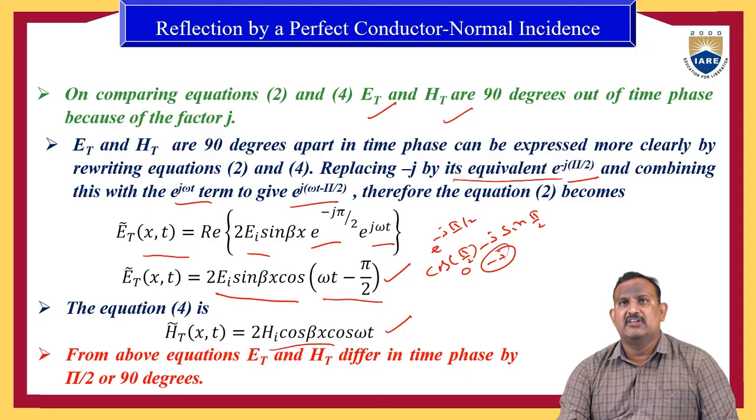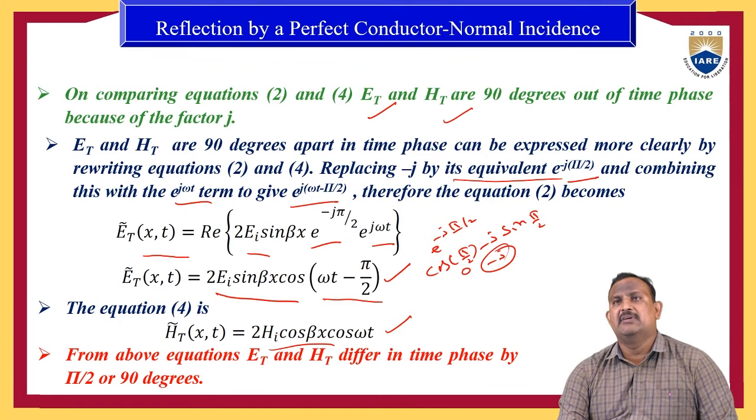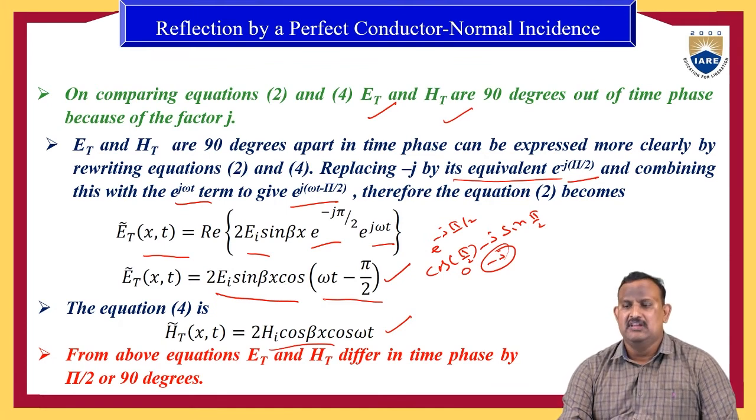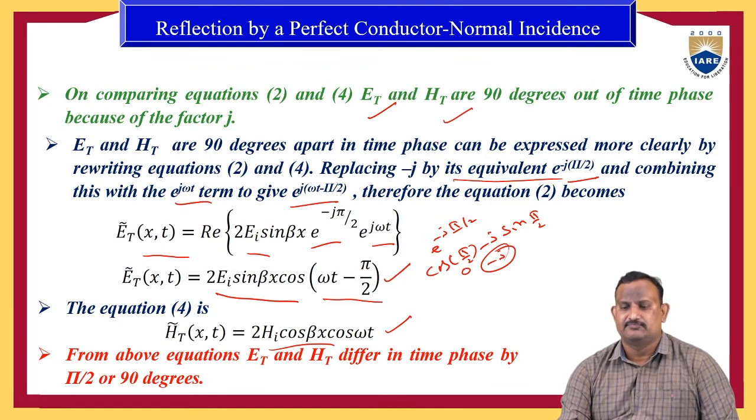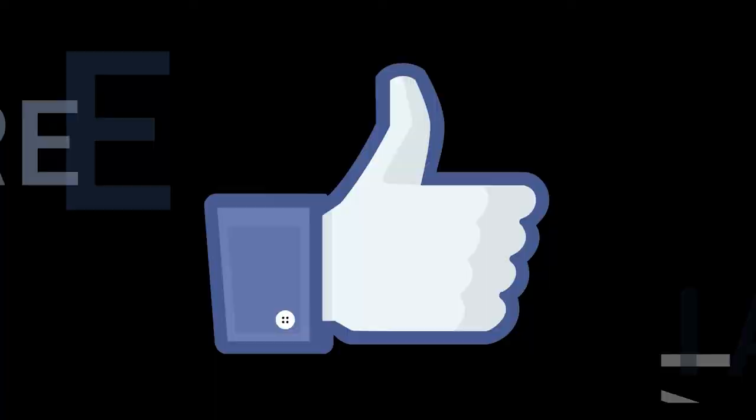This is the reflection by a perfect conductor using normal incidence. Thank you.